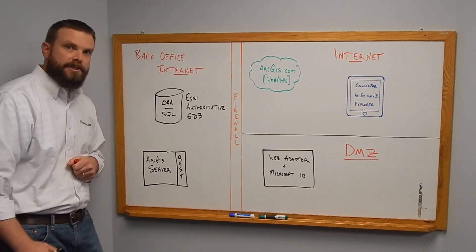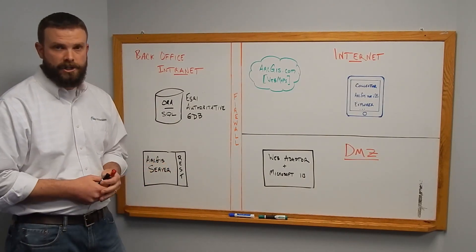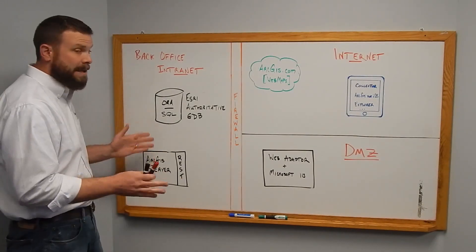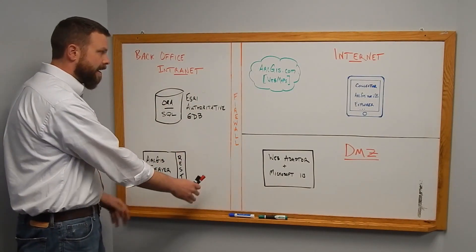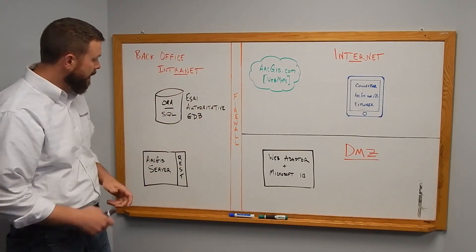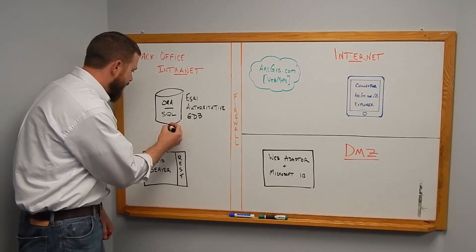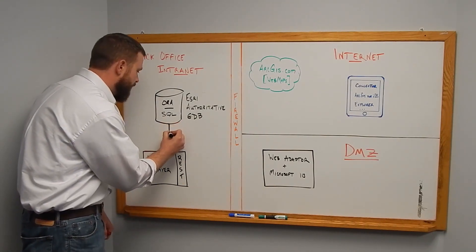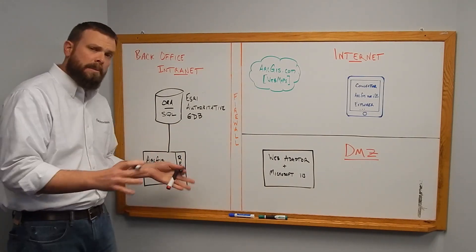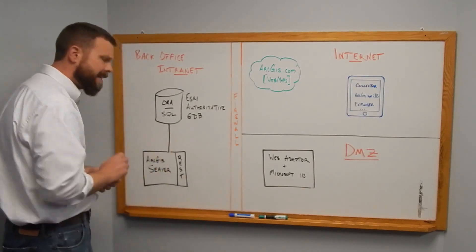The next component is ArcGIS Server. Many of you may already have ArcGIS Server, and if you do that's great. Key point to note is it's still in the back office, completely behind our firewall, which you see drawn here vertically in orange. Our first step is to take this data from your Oracle or SQL Server geodatabase and get it exposed out into ArcGIS Server — pretty typical, you're likely already doing this.